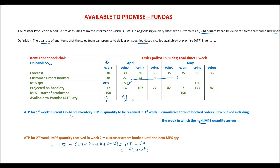As you get more orders booked by customers, the available to promise of 91 in week 2 will continue to reduce through weeks 3, 4, 5, and so on. In week 7, we are again receiving an MPS quantity of 150 units. Since there are no customer orders booked in week 7 or week 8, the entire 150 units is available to be promised — so 150 is the ATP quantity for week 7.